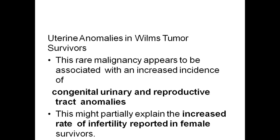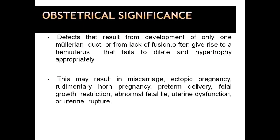Uterine anomalies in Wilms tumor survivors: this rare malignancy appears to be associated with an increased incidence of congenital urinary and reproductive tract anomalies. This may partially explain the increased rate of infertility reported in female survivors. Obstetric significance: defects resulting from development of only one Mullerian duct or from lack of fusion often give rise to a hemi-uterus that fails to dilate and hypertrophy appropriately. This results in miscarriage, ectopic pregnancy, rudimentary horn pregnancy, preterm delivery, fetal growth restriction, abnormal fetal lie, uterine dysfunction, or uterine rupture.